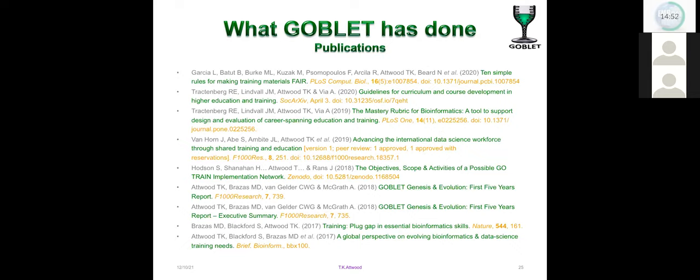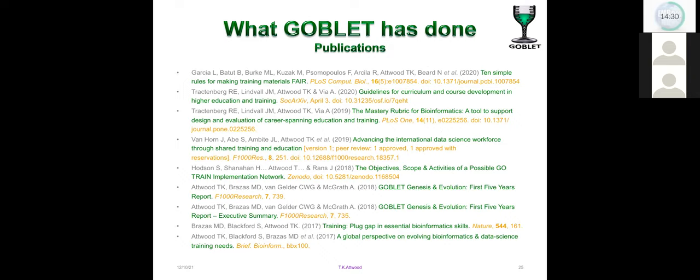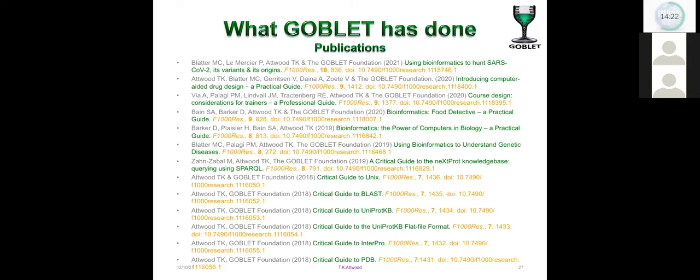I mentioned earlier that the success or appeal of the BTN meetings was at least in part that they weren't just talking shops, but generally they led to real actions, including publications. GOBLET endeavoured to continue with that tradition and publish its work either alone or in collaboration with others with ELIXIR, with BD2K and so on, leading overall to around 20 journal publications. I might have missed some. And as already mentioned, all of the guides have also been published in F1000 as part of the Bioinformatics Education and Training Collection.